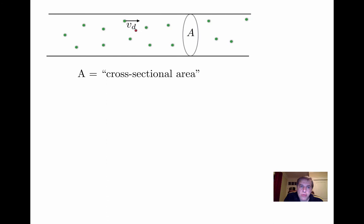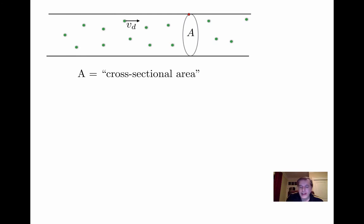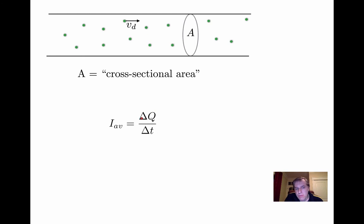All of those fictitious positive charges drift to the right at drift speed v_d. Now I cut the wire and create a cross-section, calling capital A the cross-sectional area in square meters. If the wire is a cylinder, then the area is just pi r squared. Now, my goal is to go back to the definition of average current and calculate delta Q over delta t, and get an expression that contains v_d, the drift speed.